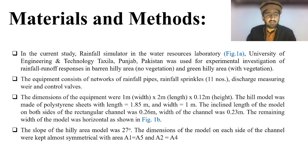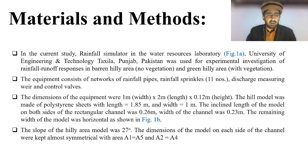The hill model was made of polystyrene sheets, also known as thermocool or thermopore sheets, with length 1.85 meters and width 1 meter. The inclined length of the model on both sides of the rectangular channel was 0.026 meter. The width of the channel was 0.23 meter, with the remaining width of the model being horizontal. The slope of the hilly area model was 27 degrees, and the dimensions of the model on each side of the channel were kept almost symmetrical.